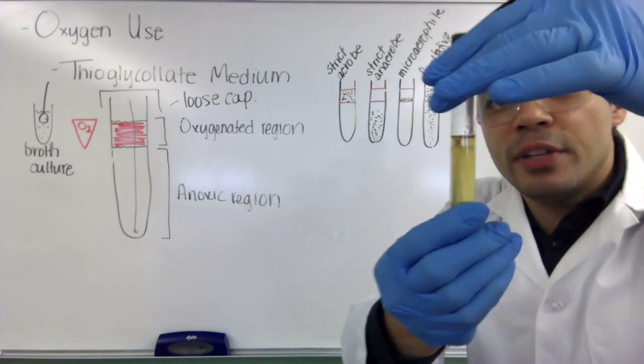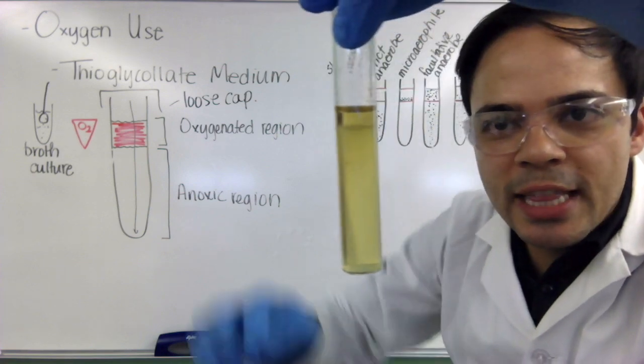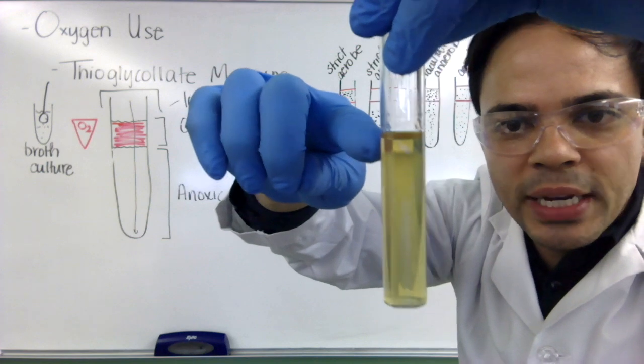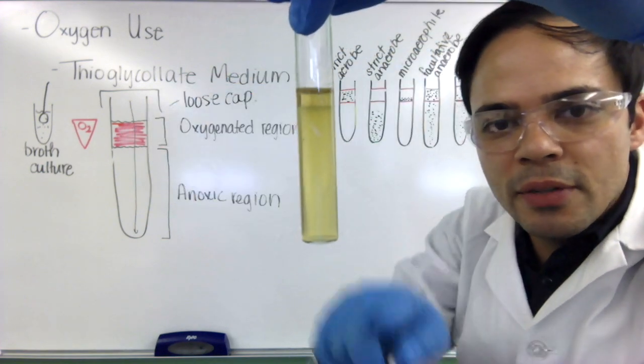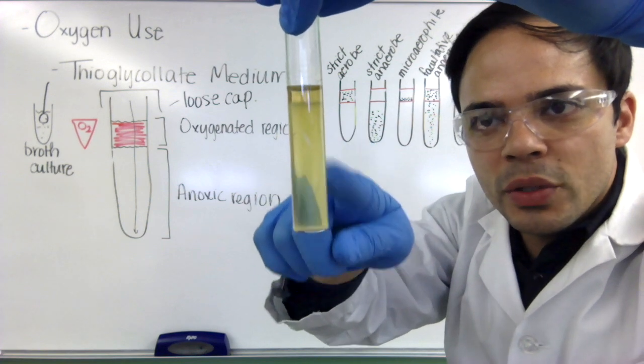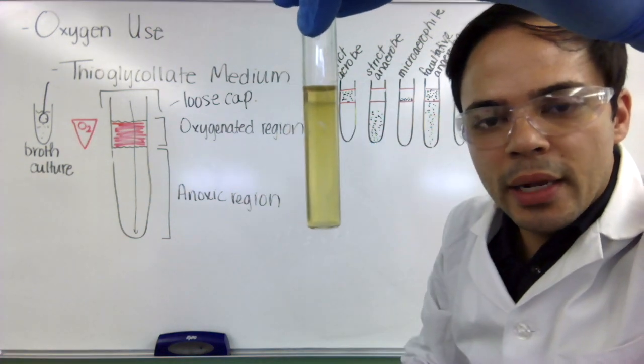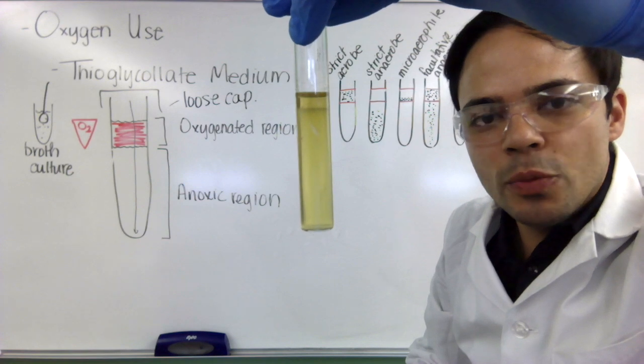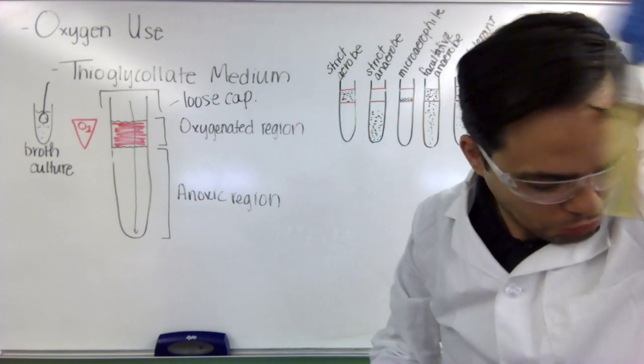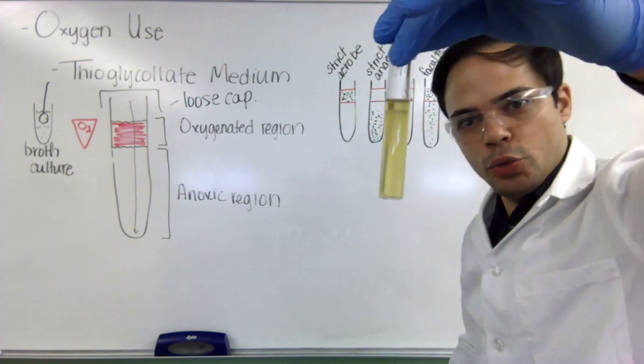If you look very carefully here, you can see that the top here, the oxygenated region has nothing growing in it, but there is lots of growth in the lower region here, the anoxic region. So this would be a strict anaerobe and this happens to be a species of clostridium. So this one's a strict anaerobe.